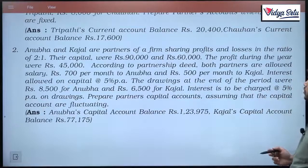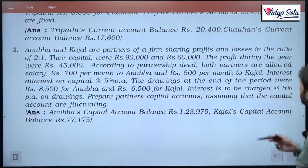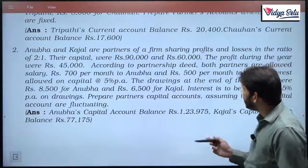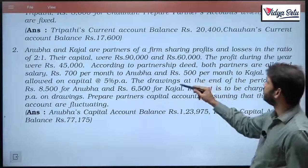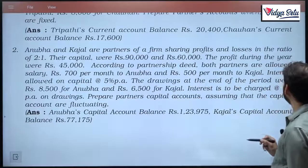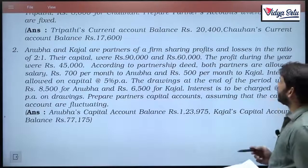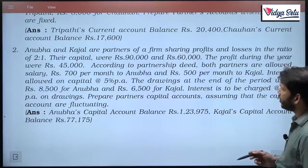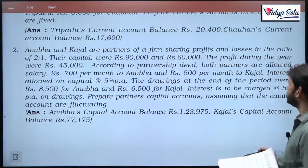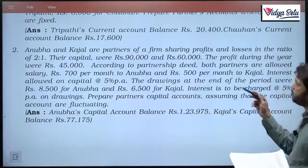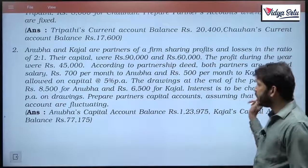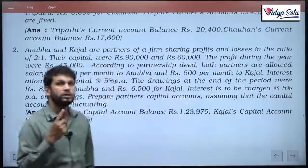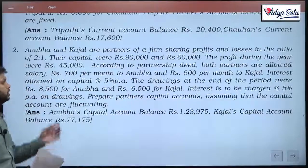Their capitals were 90,000 and 60,000. The profits during the year were 45,000. According to the partnership deal, both partners are allowed a salary of Rs. 700 per month to Anubha and 500 per month to Kajal. Interest allowed on capital at the rate of 5% per annum. The drawings at the end of the period were 8,500 for Anubha and 6,500 for Kajal. Interest is to be charged at 5% per annum on drawings. Now here, do remember, they have not mentioned irrespective of, so what we have to do, 6 upon 12.